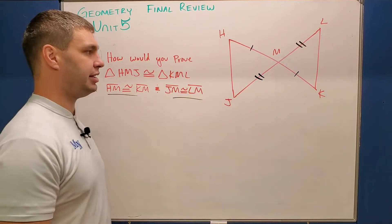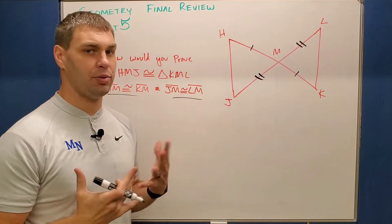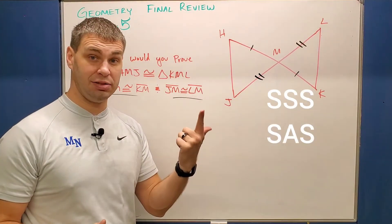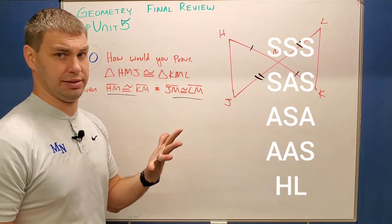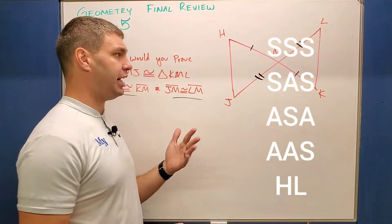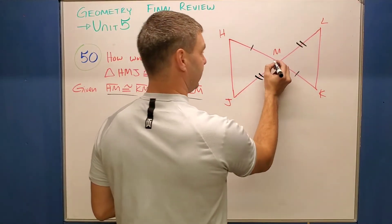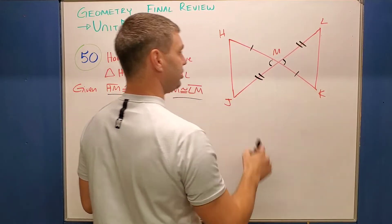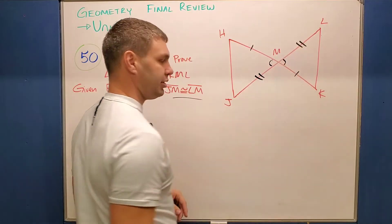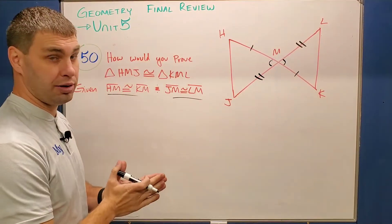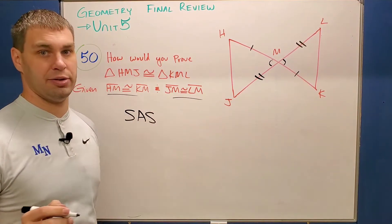I need to figure out how I can prove these two triangles to be congruent. If you remember our five different ways to prove triangles congruent — SSS, SAS, ASA, AAS, and hypotenuse-leg — I'm seeing I need two sides. And I also see that we have vertical angles here. So that gives me side-angle-side in the left triangle as well as side-angle-side in the right triangle, and they match up. Therefore this is going to be proved by side-angle-side triangle congruence.